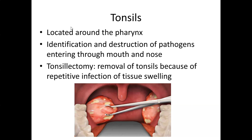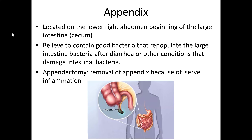The appendix is located in the lower right abdomen, at the beginning of the large intestine called the cecum. It is believed to contain good bacteria that repopulate the large intestine after diarrhea or other conditions that damage intestinal bacteria. An appendectomy is the removal of the appendix because of severe inflammation.